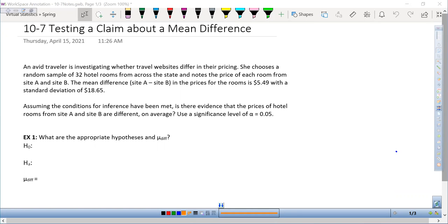An avid traveler is investigating whether travel websites differ in their pricing. She chooses a random sample of 32 hotel rooms from across the state and notes the price of each room for site A and site B. The mean difference, site A minus site B, in the prices for the rooms is $5.49, with a standard deviation of $18.65.